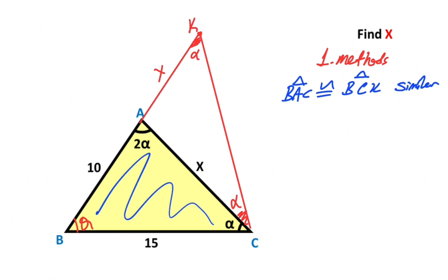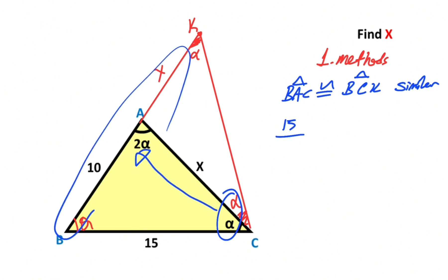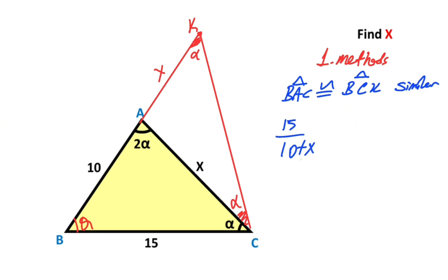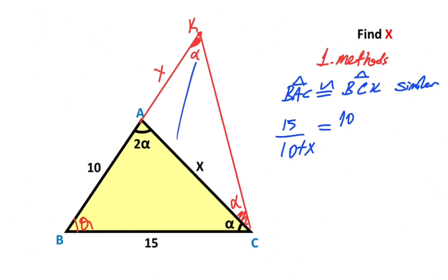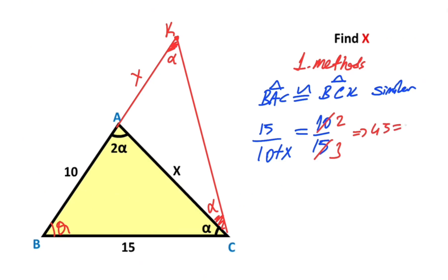Starting the calculation with this triangle: 15, which is opposite the 2-alpha, over 10 plus X, which is opposite the 2-alpha, must equal 10, which is opposite alpha, over 15, which is opposite alpha. If you simplify the expression, therefore 225 equals 200 plus 20X plus 2X, which means 2X equals 25, so X is going to be 12.5 units. This was the first method.